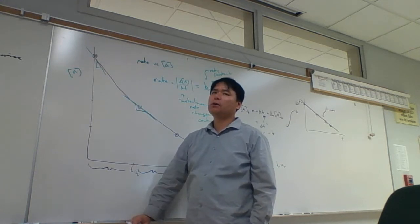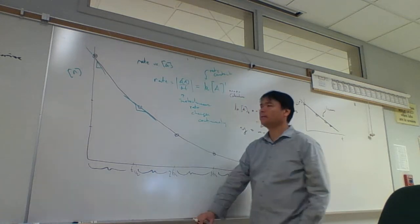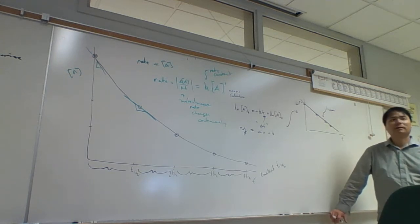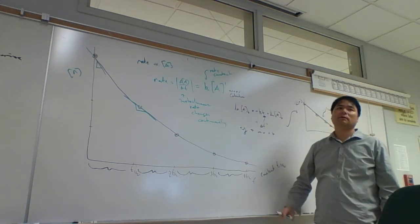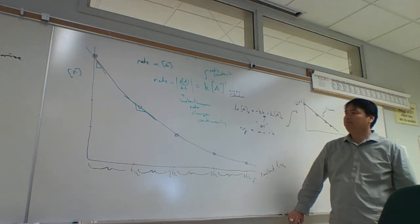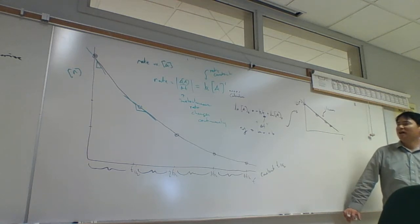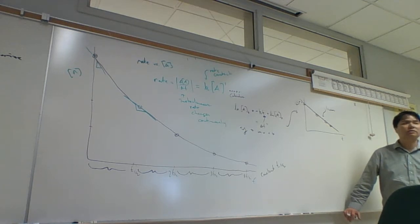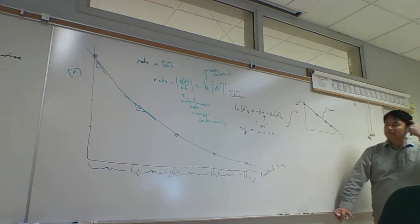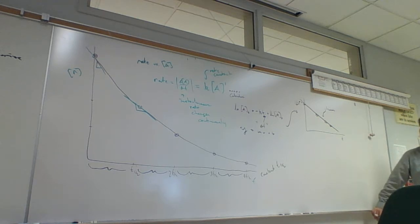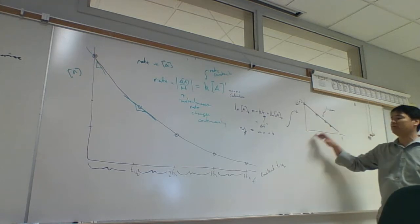Do you need log paper to do that? No, we don't need log paper. We could do semi-log paper, but what we do is just plot on regular paper and take the log of it. We take the natural log of all the A values and then plot the natural log. If we plot the natural log of A versus T, we can plot it on regular graph paper. In fact, we're going to do that today in the computer lab.